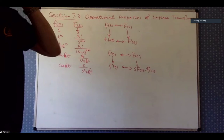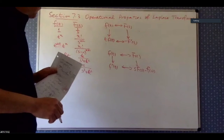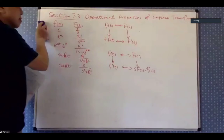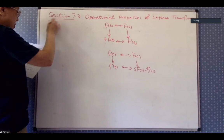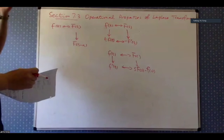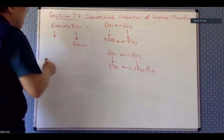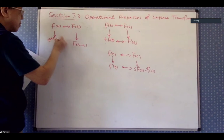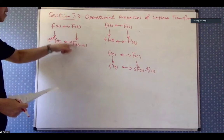Today we are doing this: we are replacing s by s minus a on the right-hand side and seeing what it does on the other side. This is the same as multiplying by e to the at on the left. Multiplying on the left by e to the at is the same as replacing s by s minus a.